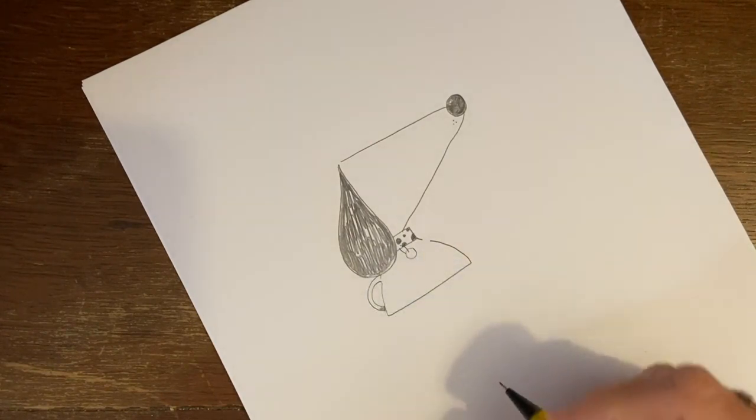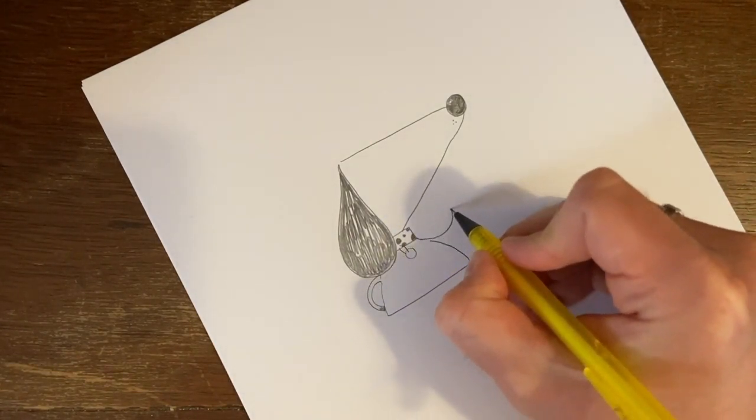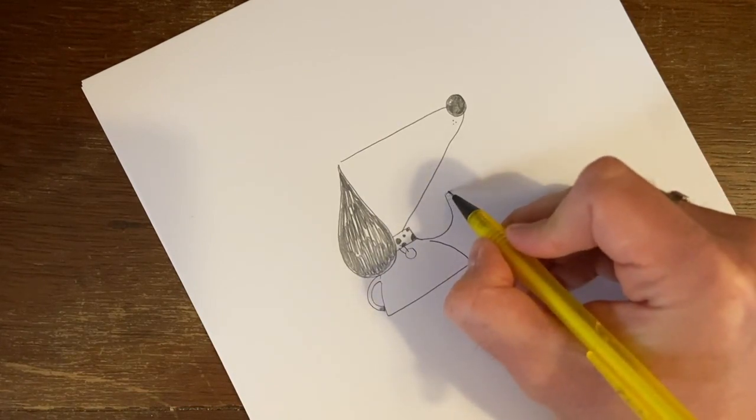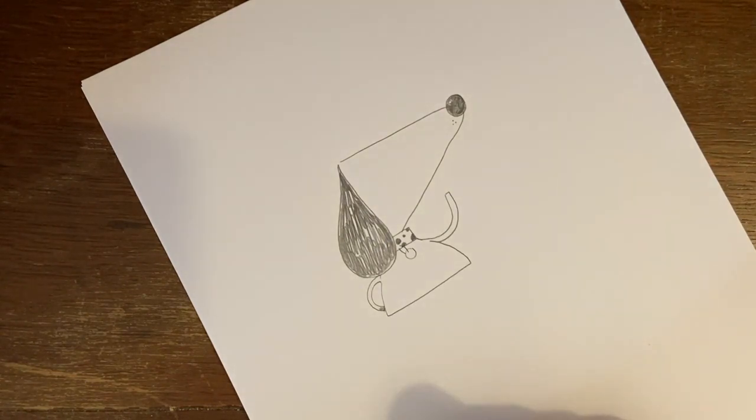And then we're going to draw his other arm, which is just a great big, sort of like a spout of a teapot really, pointing up in the air. Nice and easy.